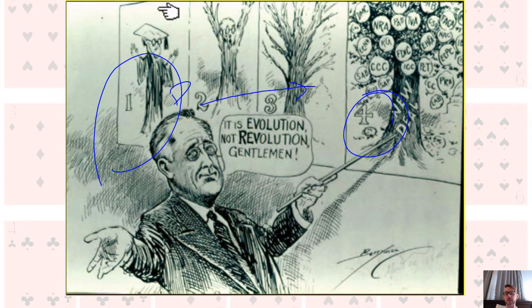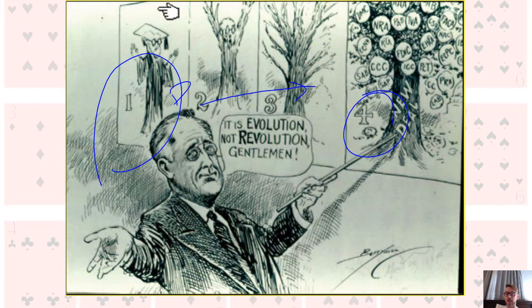Roosevelt came in for a fair amount of criticism for the sheer staggering volume of legislation that the New Deal comprised. One cartoonist made the point that FDR wanted to convey — that this New Deal was not a revolution, not a fundamental overthrowing of the American way of life. It was an evolution, starting with the brain trust and moving forward through all the New Deal laws. In a way, this is correct: progressive ideas are not new, and Roosevelt was simply enacting many things progressives would have favored between 1901 and 1920. We can almost think of the New Deal as Progressivism 2.0.